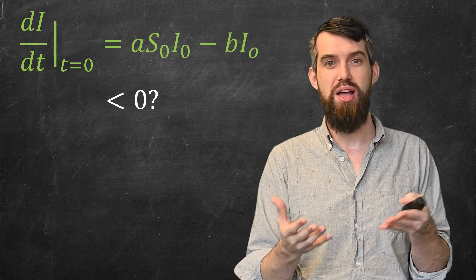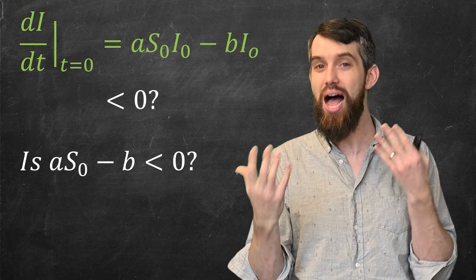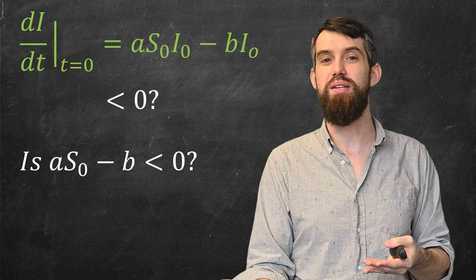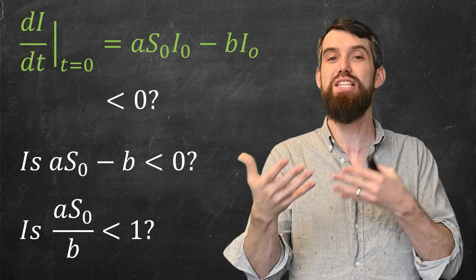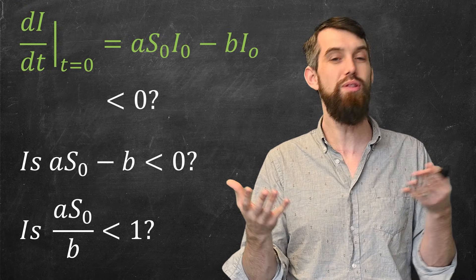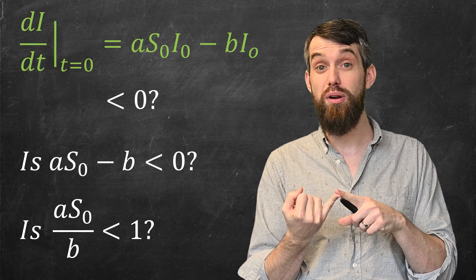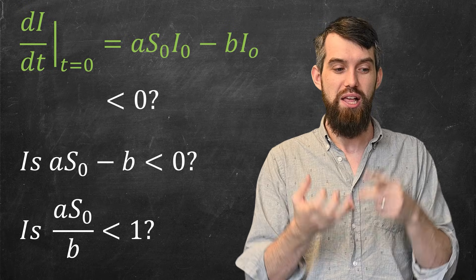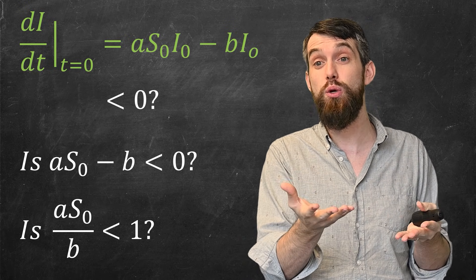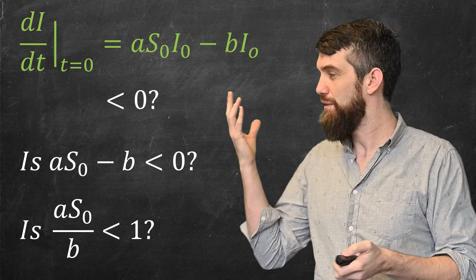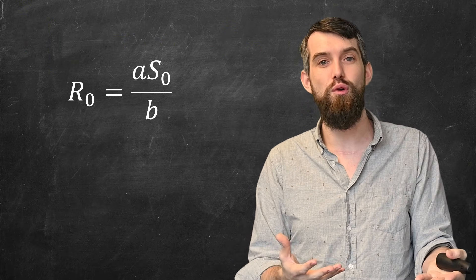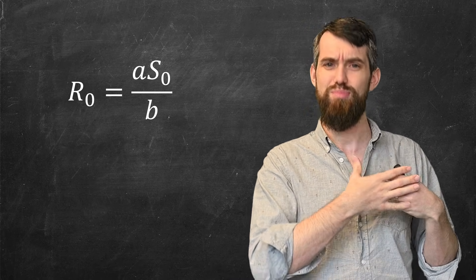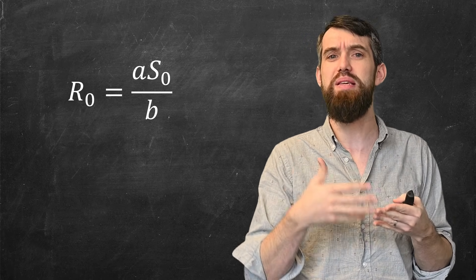So this is the question: when you look at the initial number of susceptible people, and the two transmission rates a and b, this particular ratio — a·S₀/b — is what we're asking about: is it less than one or bigger than one? This ratio is actually given a name you may have seen before. It is called R-naught (R₀). R₀ is not to be confused with R₀ as the initial population of recovered people — but R₀ is defined to be this particular ratio a·S₀/b.